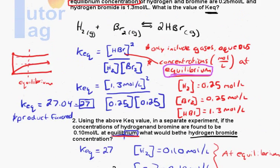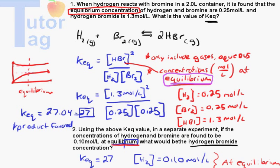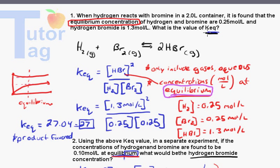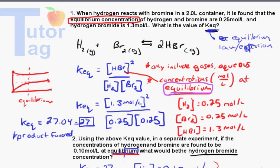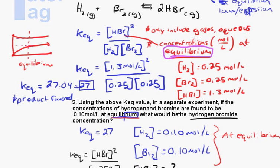The main important thing: when writing the mathematical representation — the Keq, called the equilibrium law or expression — you only include concentrations at equilibrium. They must be in moles per liter, and only gases or aqueous substances are included. Thank you.